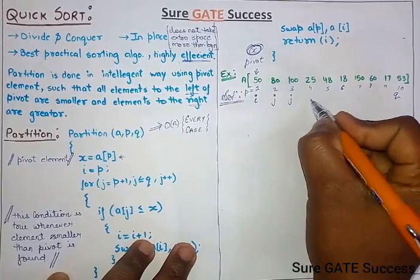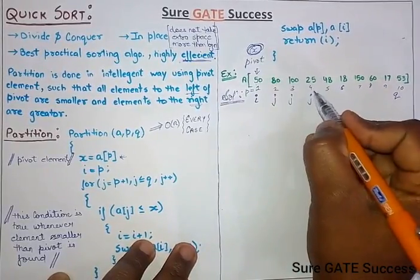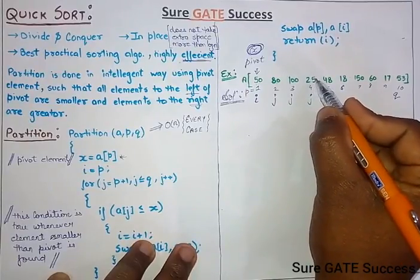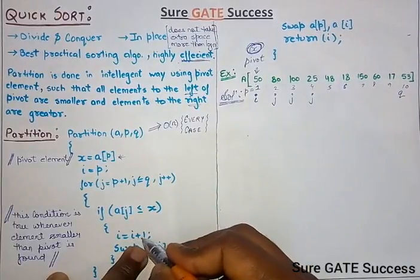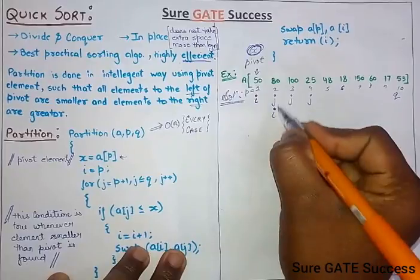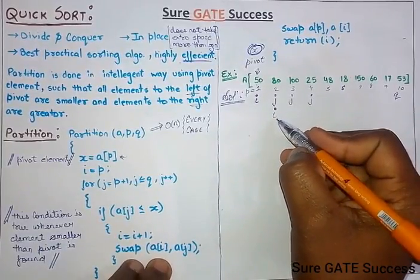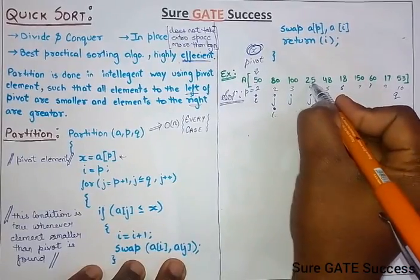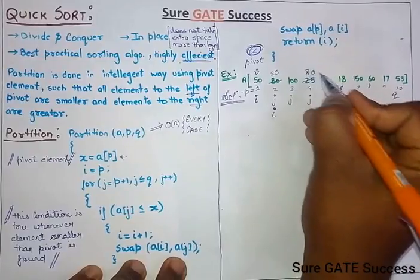We go through the elements: is this less than the pivot? No — escape. Is this less? No — escape. Is this less? No — escape. This one is smaller than the pivot element. So we increment I — I becomes 2 — then we swap the value of A[I] with A[J]. The value at I is 80 and the value at J is 25, so we swap those values.